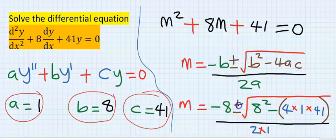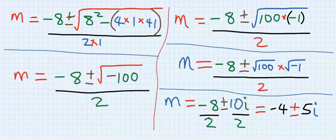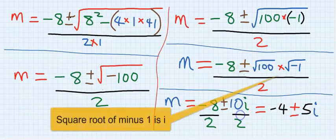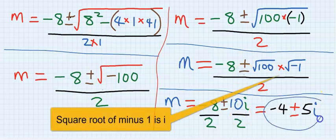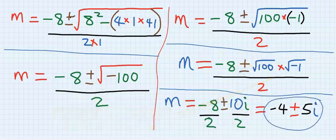As you substitute, be careful of your brackets. If you solve this quadratic equation carefully, following every step I have stipulated here, you are going to get this, which is minus 4 plus or minus 5i.